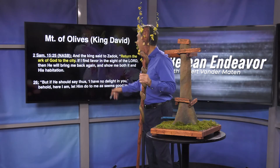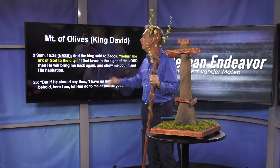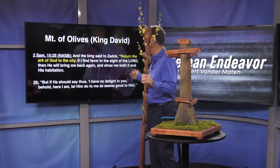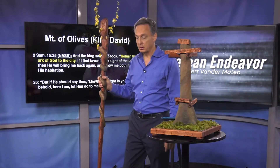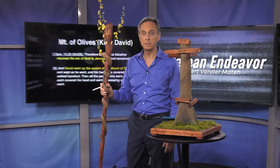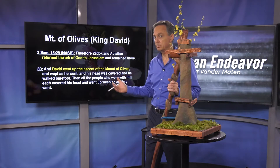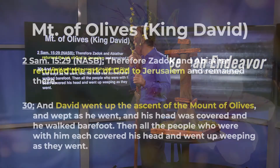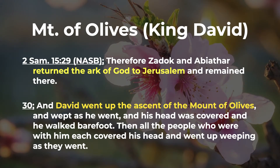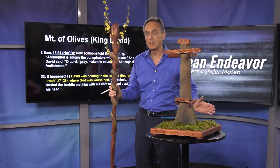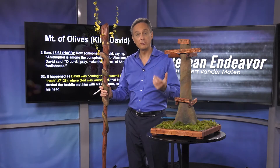David says to Zadok: 'Return the Ark of God to the city. If I find favor in the sight of the Lord, He will bring me back and show me both it and His habitation. But if He says He has no delight in me, let Him do to me as seems good to Him.' David was a very humble and repentant person — that's why David had a heart after the Lord. In 2 Samuel 15:29, Zadok returns the Ark of God to Jerusalem. Then in verse 30, David goes up the ascent of the Mount of Olives, weeping as he went, his head covered, walking barefoot.